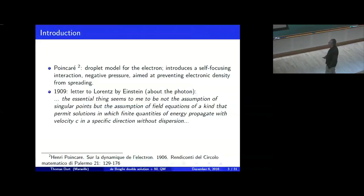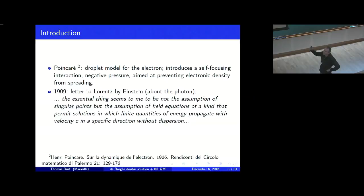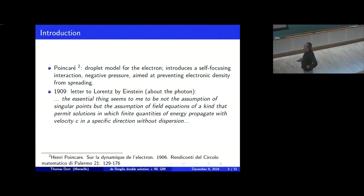You can find a similar idea in a letter of Einstein to Lorentz in 1909. There he was not talking about the electron but about the photon. Einstein was aware that it was necessary to give a corpuscular description of light, but at the same time, if you take Maxwell's equations, waves have a natural tendency to spread. He wrote to Lorentz that the essential thing seems to be not the assumption of singular points, but the assumption of field equations of a kind that permits solutions in which finite quantities of energy propagate with velocity in a specific direction without dispersion. He had the idea that one could replace Maxwell's field equations by nonlinear equations.